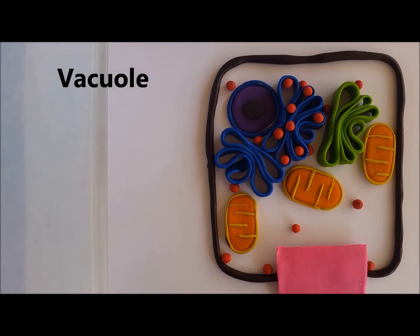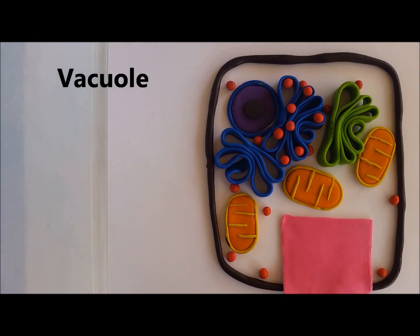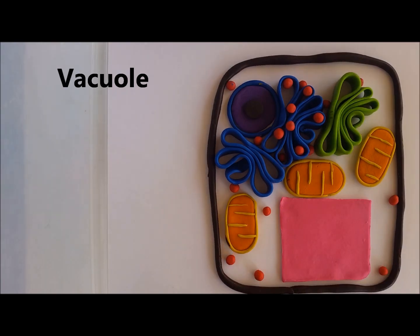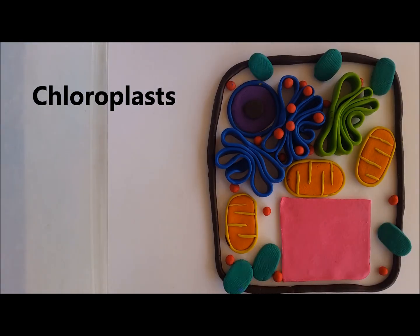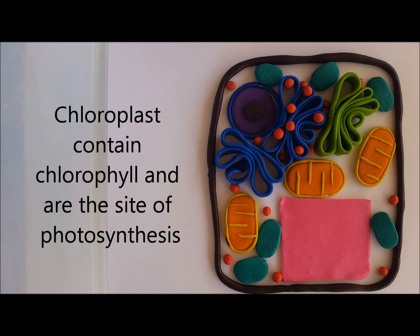Plant cells also have a vacuole, which is considerably larger than in animal cells but still functions in the same way — storing water. Plant cells also have two other organelles not found in animal cells. The first is the chloroplast, which contains chlorophyll and is the site where photosynthesis takes place. Photosynthesis is the process where plants convert energy from sunlight into energy that can fuel the cell.